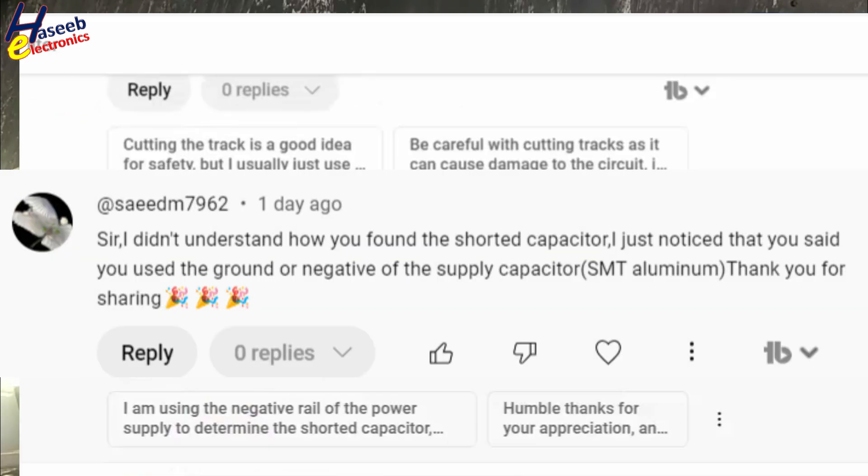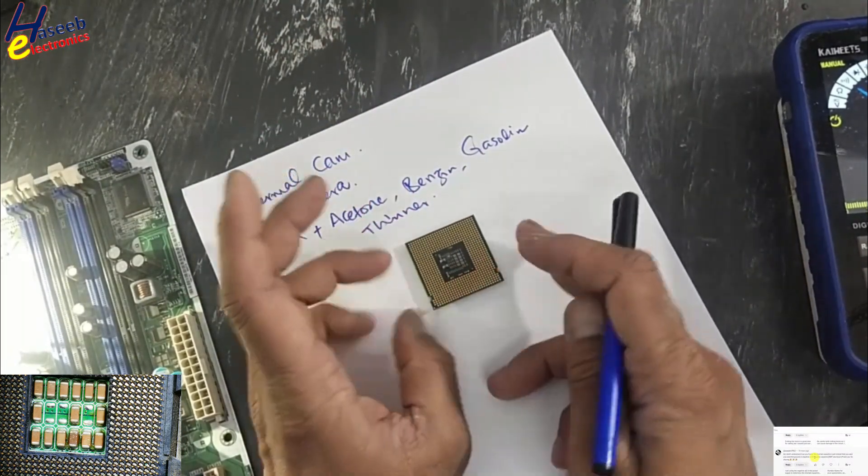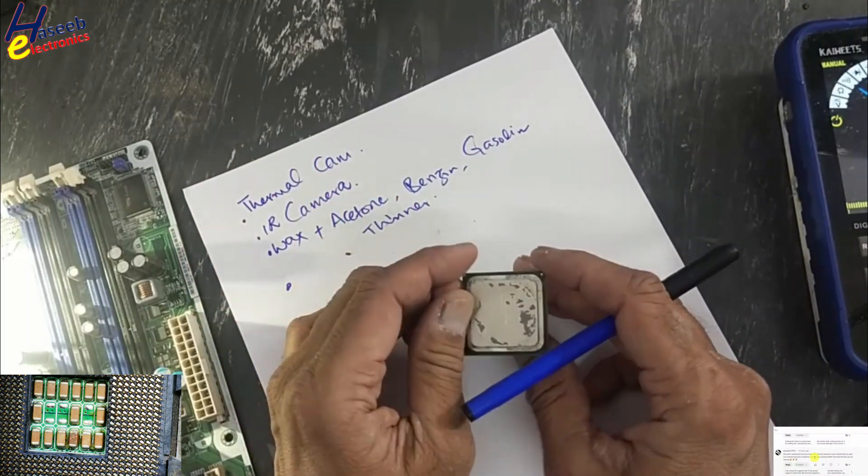Sir, I did not understand how do you find a shorted capacitor? I just noticed that you said you used ground or negative. Yes, you are right. When I was recording video, I said we need to check the datasheet of that specific component.